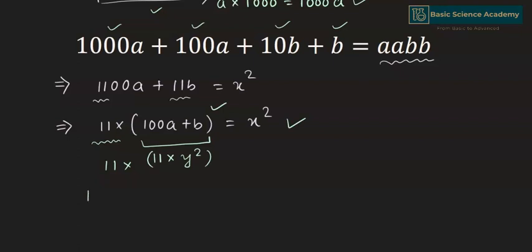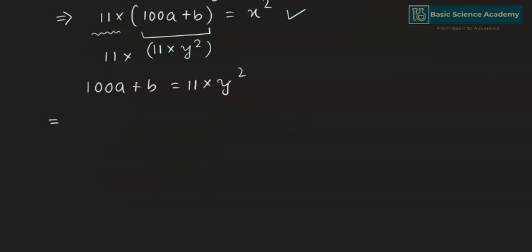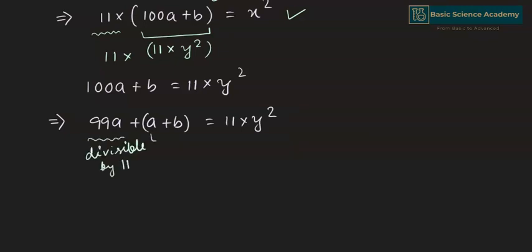Hence 100A + B = 11×y². We can rewrite 100A as 99A + A, giving us 99A + A + B = 11×y². Since 99A is already divisible by 11, A + B must also be divisible by 11.